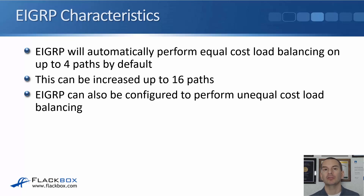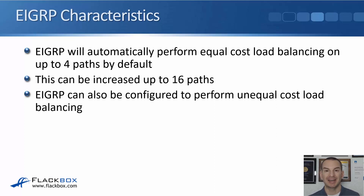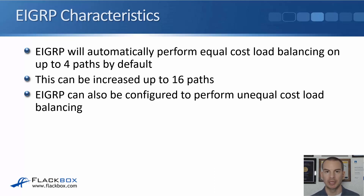All other routing protocols, if there are multiple paths with the same metric, can load balance over those equal cost paths. But EIGRP can have multiple paths with unequal metrics, and you can configure it to load balance over those different paths. It won't do it automatically, so you have to manually configure it if you want to.